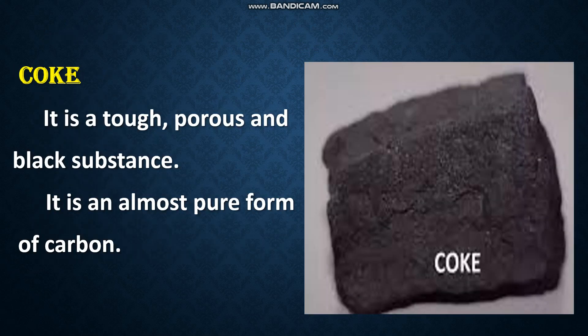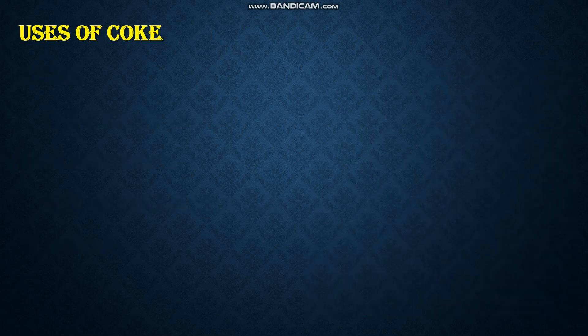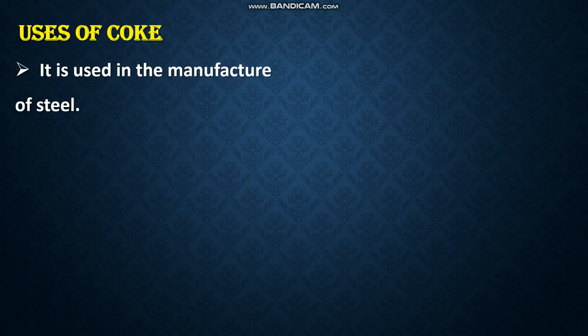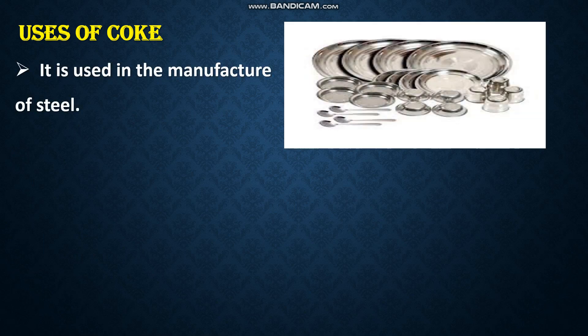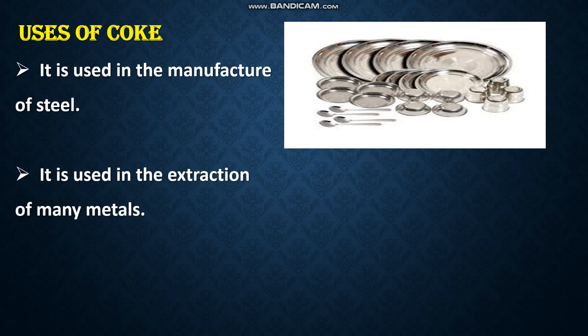What is coke? It is a tough, porous, and black substance. It is an almost pure form of carbon. Now let us see the uses of coke. It is used in the manufacture of steel and it is also used in the extraction of many metals.